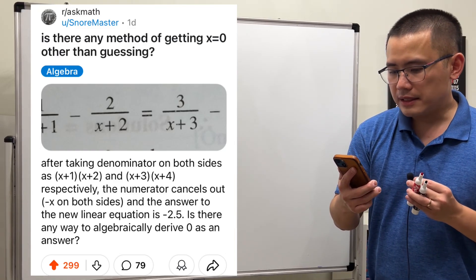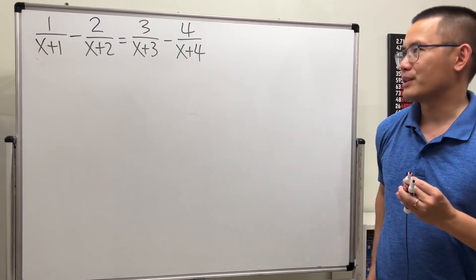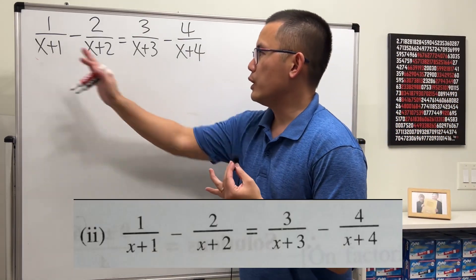Is there any method of getting x equals 0 other than guessing? Okay, let's have a look. Here we are going to solve this equation.